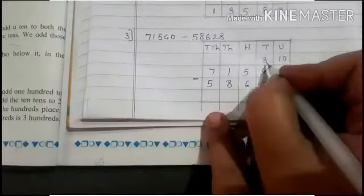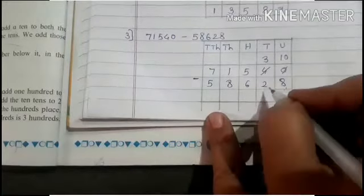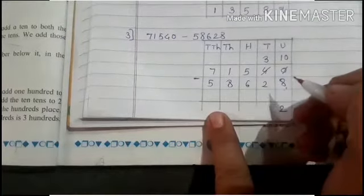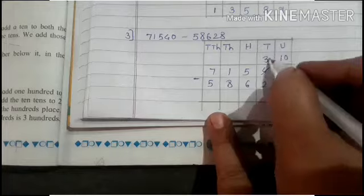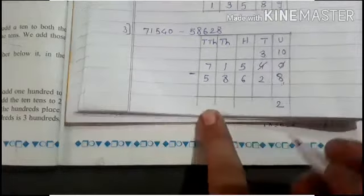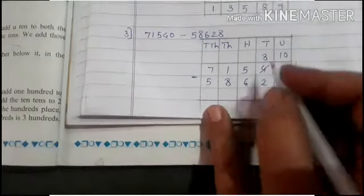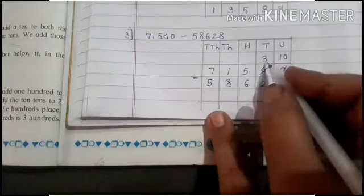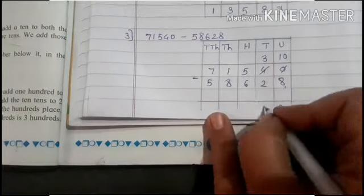Now 3 minus 2. Is 3 minus 2 possible? Yes, as 3 is bigger than 2. So 3 minus 2 is 1.